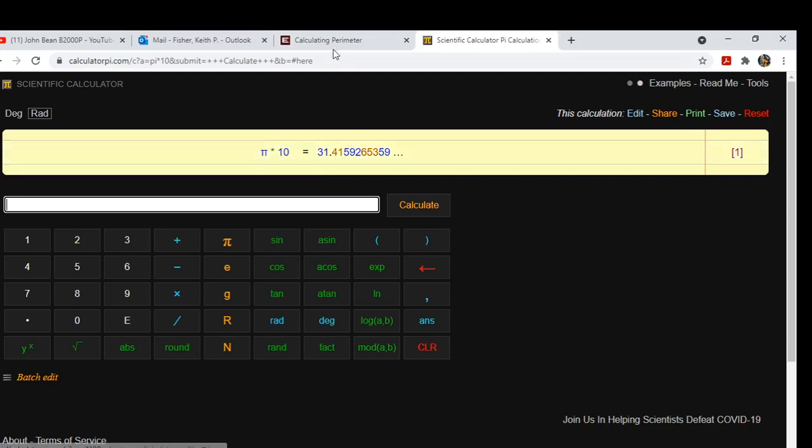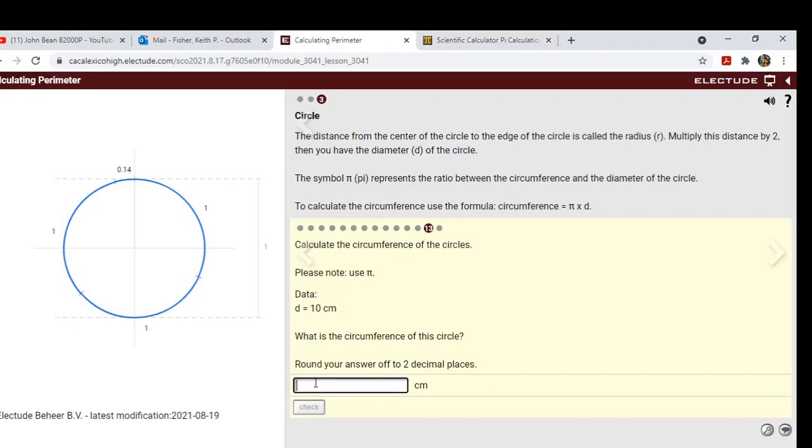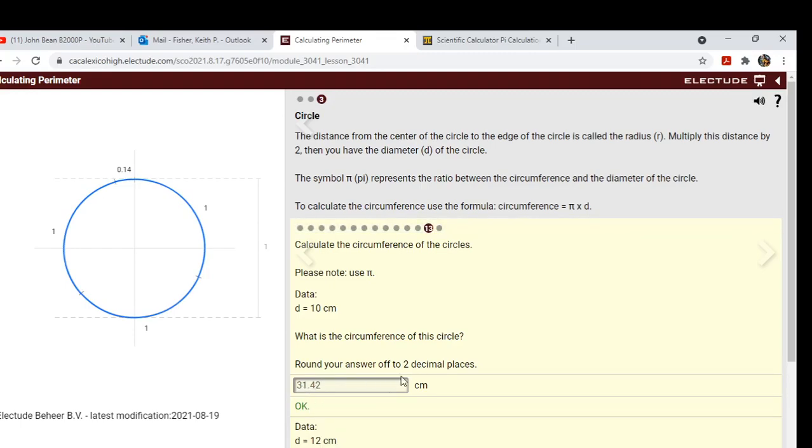All right, so let's go back. So we're at 31.415, but it says round off to the nearest decimal place, so we're going to go back and put 2. All right, so it gives us it as a correct answer.